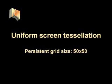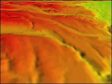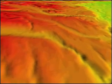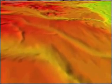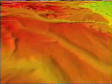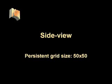Now we show the uniformity of screen tessellation using a grid of resolution 50 by 50. As can be seen, the screen space error is very small compared to previous object space metrics.